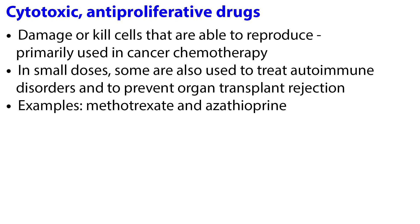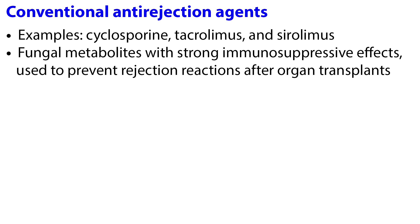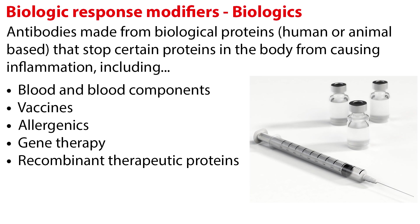Cytotoxic antiproliferative drugs damage or kill cells that are able to reproduce and are primarily used in cancer chemotherapy. However, in small doses, some are also used to treat autoimmune disorders and to prevent organ transplant rejection. Examples include methotrexate and azathioprine. Conventional antirejection agents include drugs such as cyclosporine, tacrolimus, and sirolimus, which are fungal metabolites with strong immunosuppressive effects, used to prevent rejection reactions after organ transplants. Extensive research has been done to develop drugs with a more specific immunosuppressive action, causing fewer or less severe adverse effects than older immunosuppressants. They are often referred to as biologic response modifiers, or biologics.